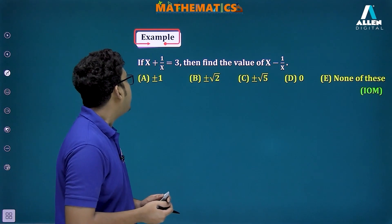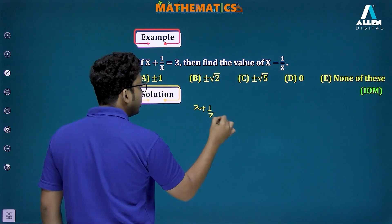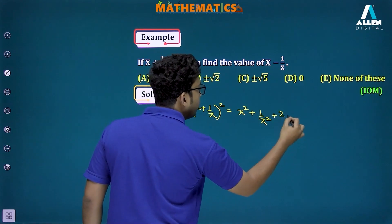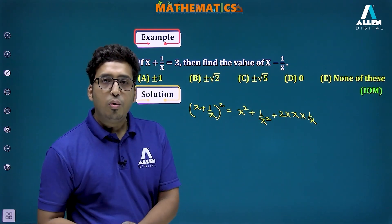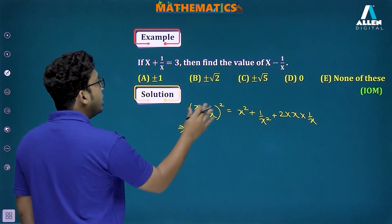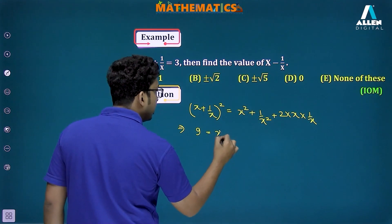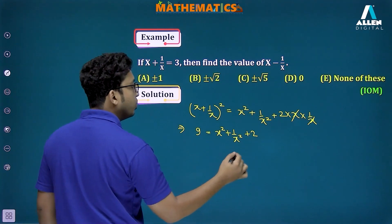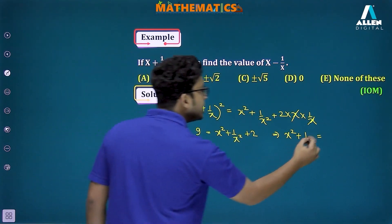Next question: x+1/x = 3, find the value of x-1/x. First, square both sides: (x+1/x)² = x²+1/x²+2·x·(1/x). Since x and 1/x cancel, we get 3² = x²+1/x²+2, so 9 = x²+1/x²+2, giving x²+1/x² = 7.